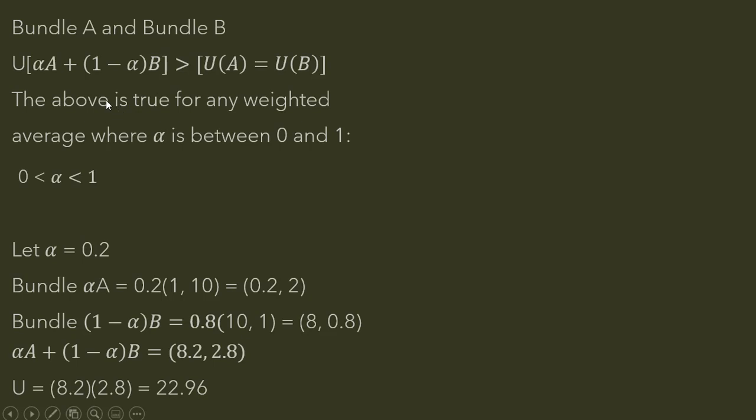We have two bundles, Bundle A and Bundle B. With convex preferences, the following will be true: basically, any weighted average of Bundle A and Bundle B will be preferred to the extreme bundles, Bundle A or Bundle B. And since they're on the same indifference curve, we just set U(A) equal to U(B). So the above statement is going to be true for any weighted average where alpha is between 0 and 1. In the previous slide, we set alpha equal to one-half.